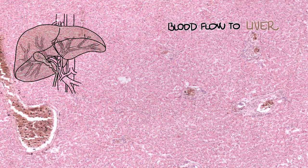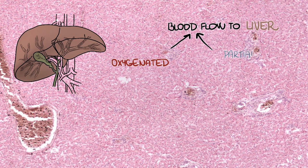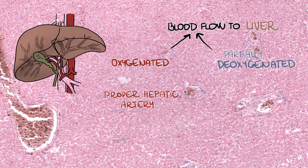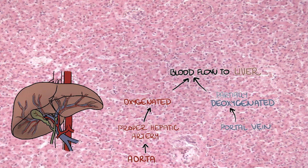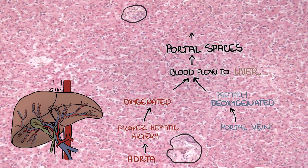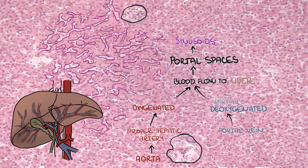Blood flow to the liver is unique since it receives both oxygenated and partially deoxygenated blood. The propriohepatic artery brings oxygenated blood from the aorta to the liver, while the portal vein brings partially deoxygenated blood from portal circulation. Their branches enter portal spaces, merge at the level of sinusoids, and continue as a single bloodstream via central veins.